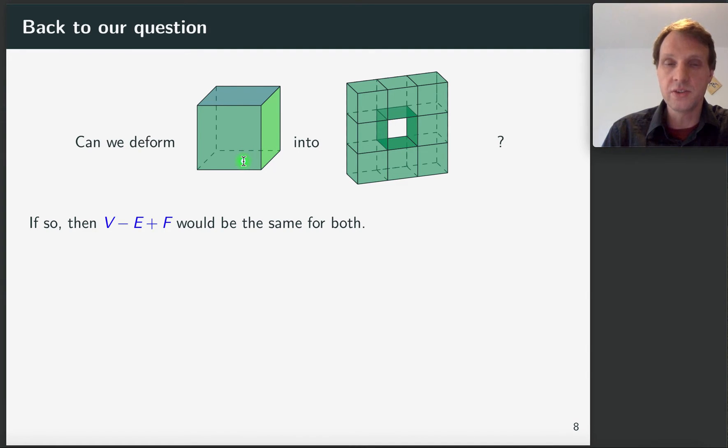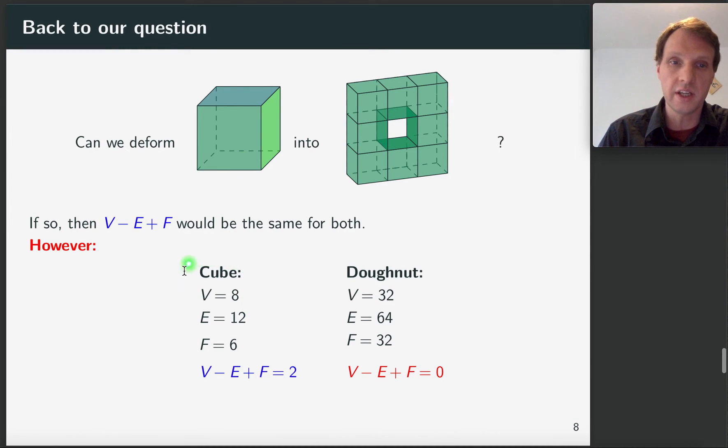So let's do that. Let's compute these numbers. So for the cube, we've already done that. And the number turns out to be two, as shown here. For the doughnut, you have 32 vertices, 64 edges and 32 faces. So if you compute this number here, then vertices minus edges plus faces turns out to be zero.